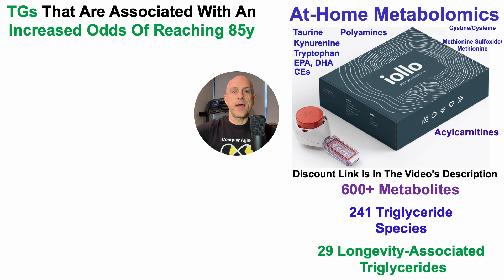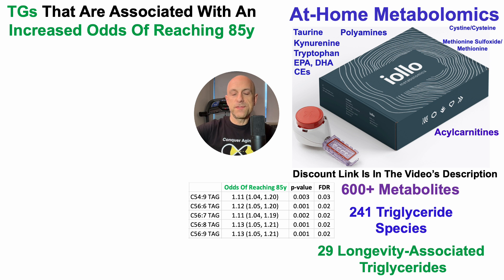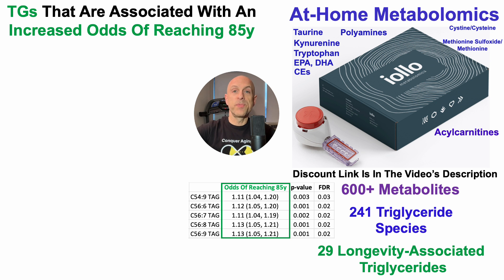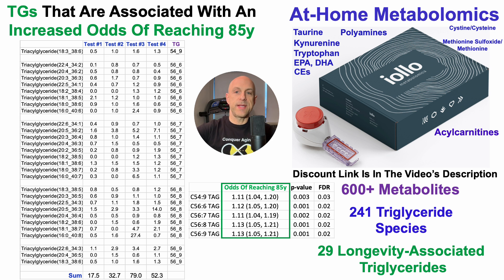In terms of those triglycerides associated with an increased odds of reaching 85 years, we can see those five here: C54:9, and then C56 with 6, 7, 8, or 9 double bonds. Each of these is significantly associated with an increased odds of reaching 85 years, as their 95% confidence interval — the data in parentheses — is completely above one. Additionally, the p-value and FDR (false discovery rate) are each less than 0.05, highlighting statistical significance. But as mentioned, there are 29 longevity-associated triglycerides in total.